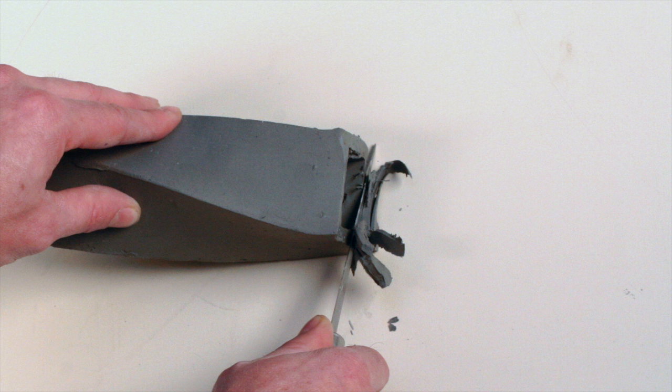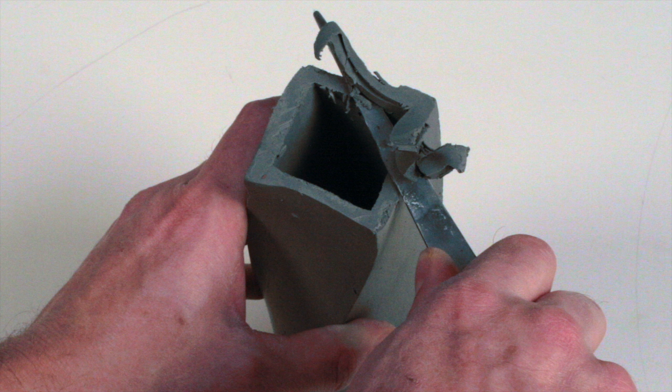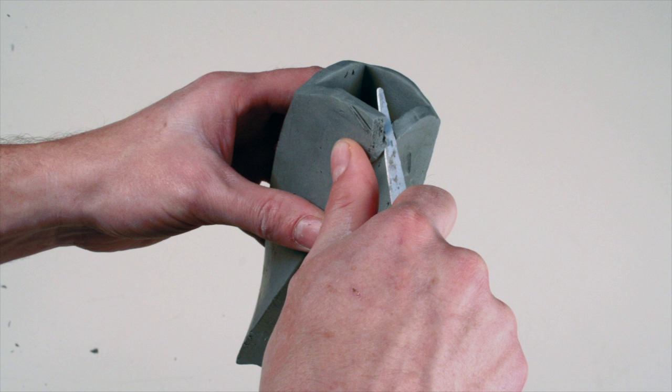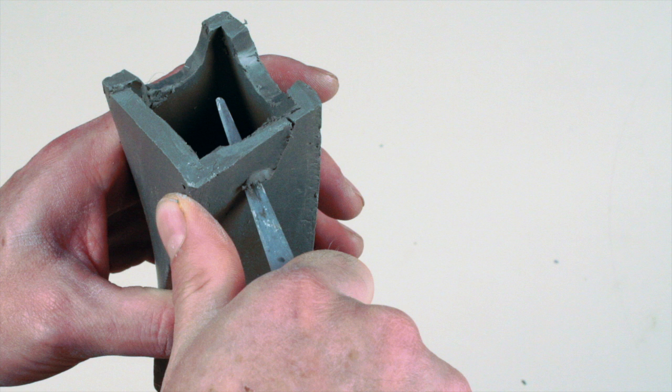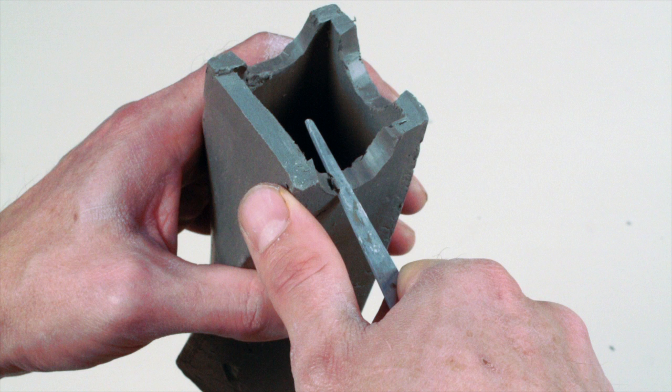Select one of the extruded tubes and slowly carve away at the corners to make a rounded or domed top to your tube. After you've completed that, cut the bottom into small arches.